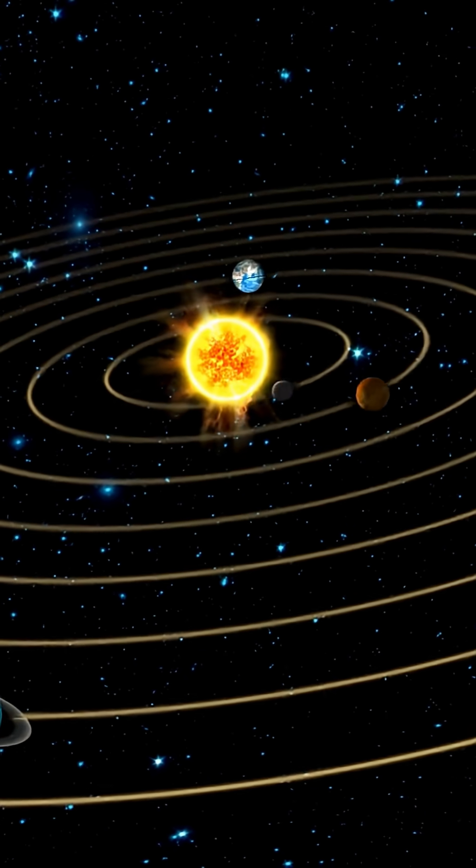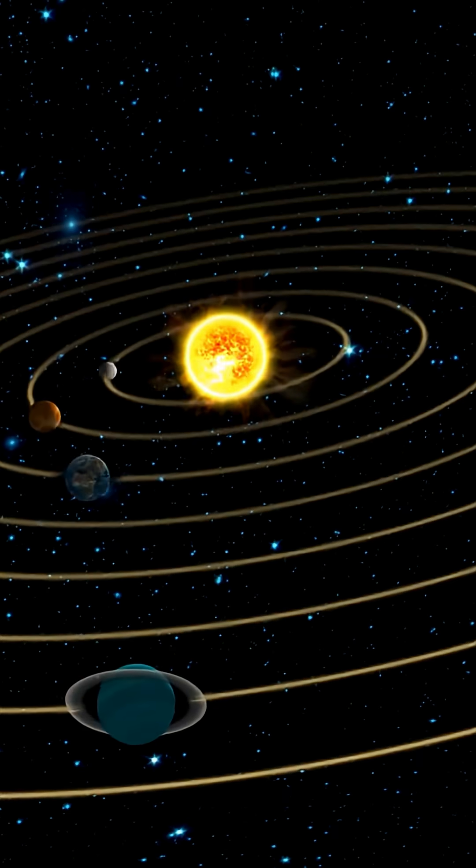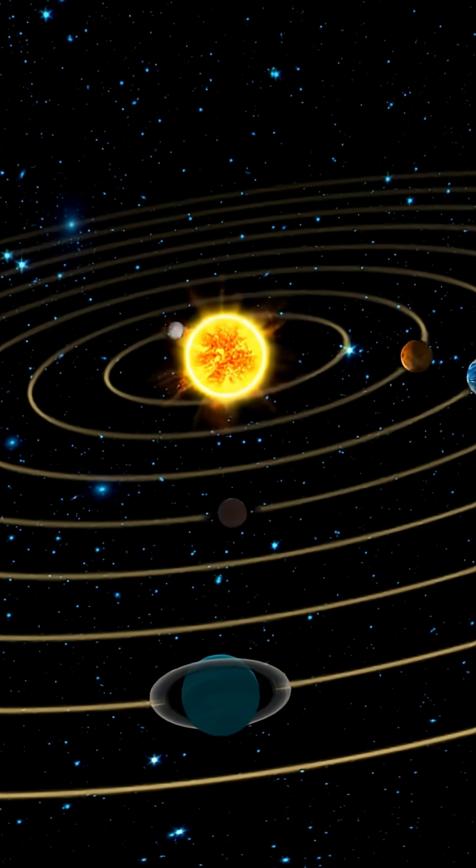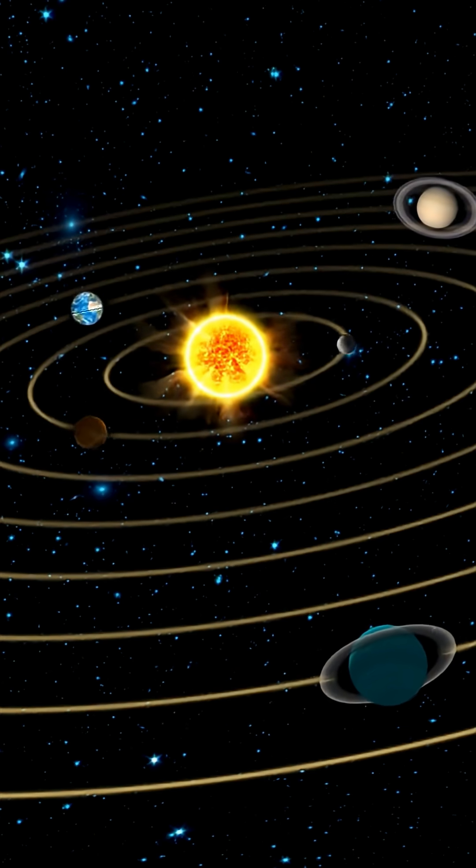But distance alone doesn't make Earth special. Our atmosphere, a mix of nitrogen, oxygen, and a dash of carbon dioxide, acts like the planet's life support system. It holds in warmth, blocks radiation, and gives us the oxygen we need to breathe.